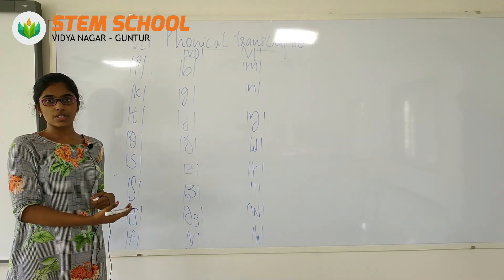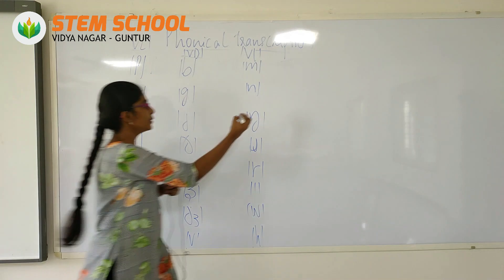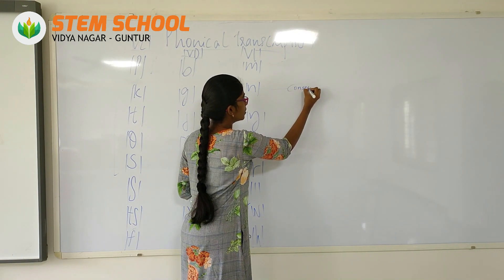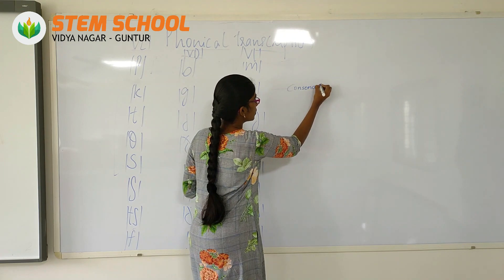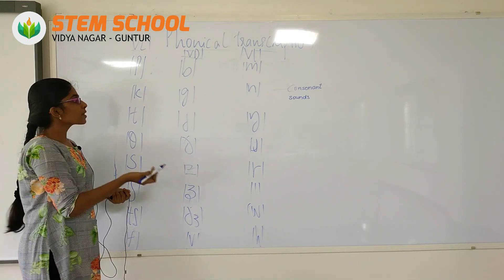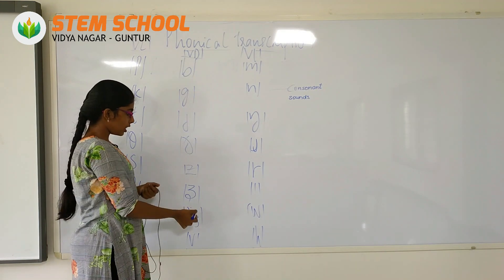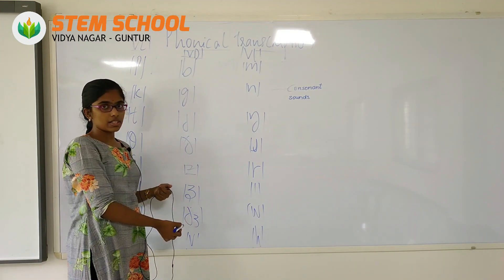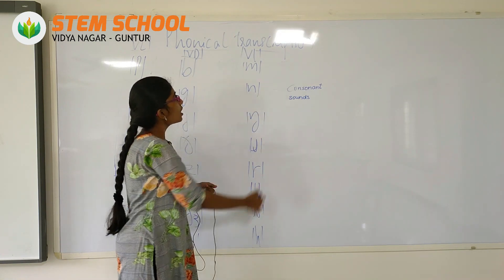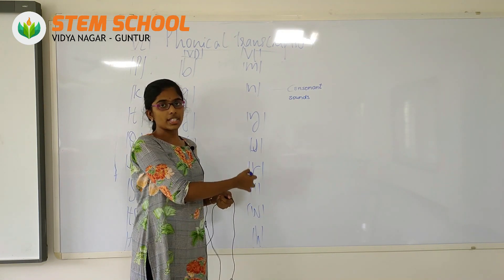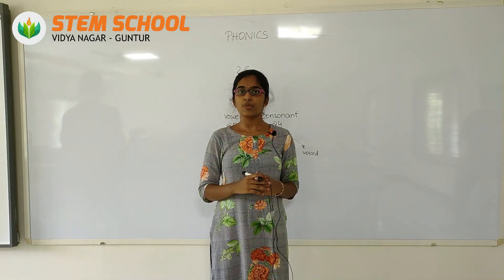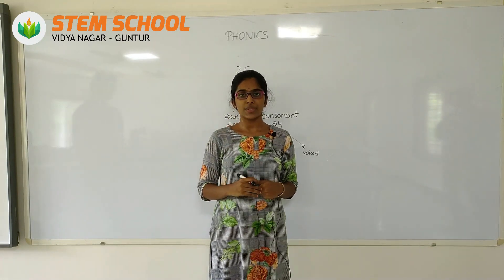These are all the 24 consonant sounds. On the right side, all 8 sounds are voiceless. In the middle, all 8 sounds are voiced. And in the last row, all 8 sounds are voiceless. Thank you. I will introduce all the letters and their phonics transcription in the next series.